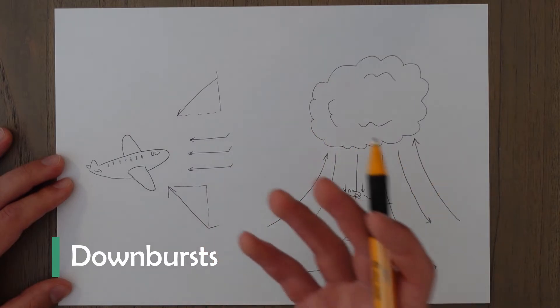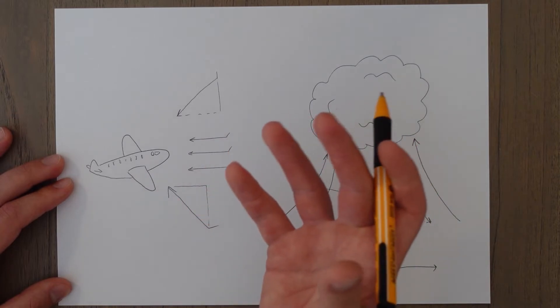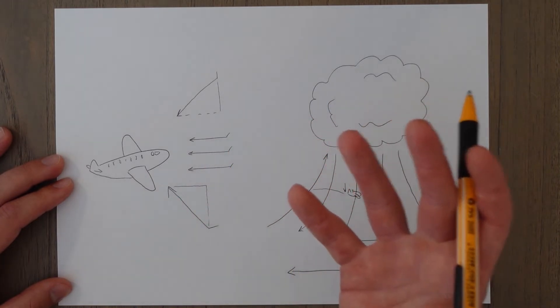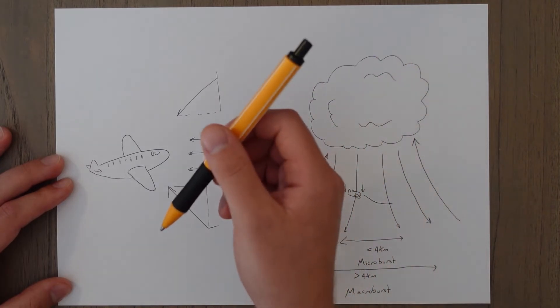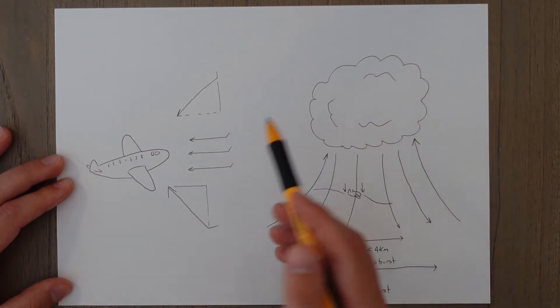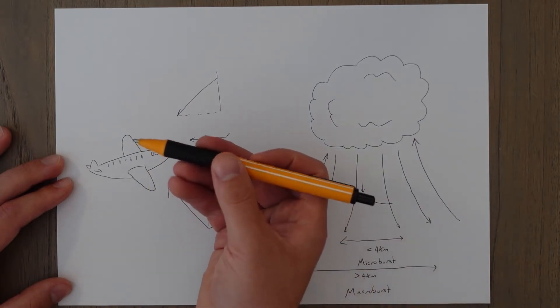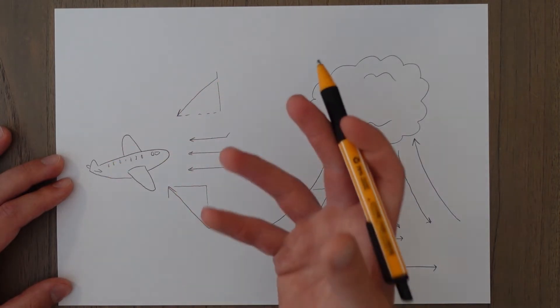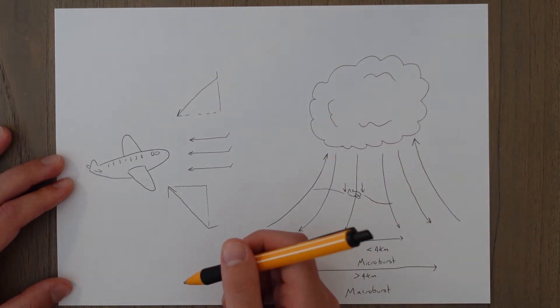Downbursts are a phenomenon where we experience downdrafts on an aircraft as we're flying through a certain column of air, but what does that actually mean? So a downdraft is a change in the vertical component of the wind. And normally we think of the wind as coming in horizontally to the aircraft like this, but in reality, though, there may be a slight vertical angle to it if we're in turbulent conditions.